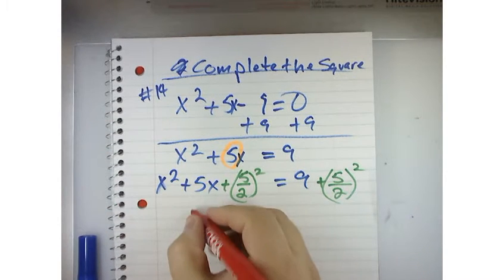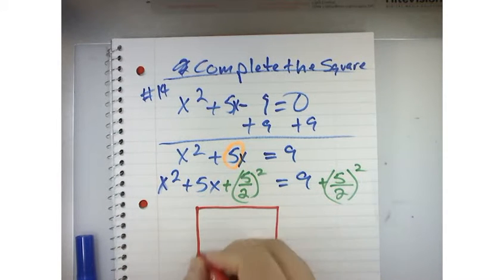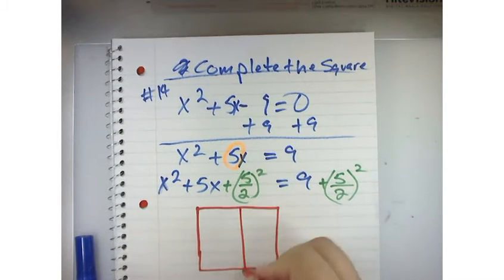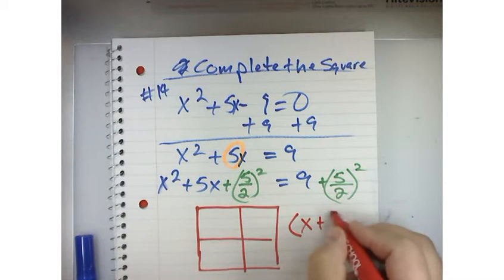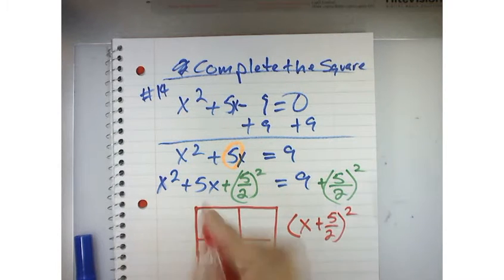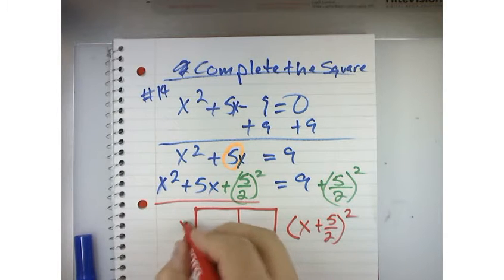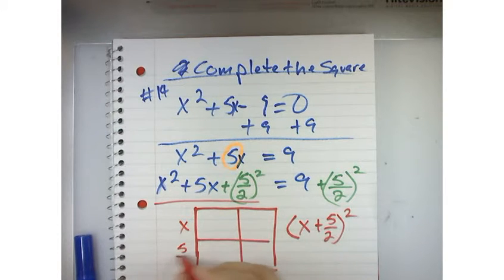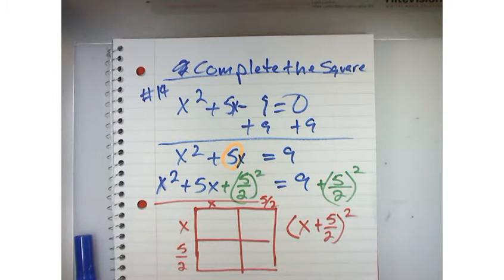The reason we do that is because it's technically x plus 5 over 2 squared will give you this stuff right here. How do I know that? It's rigged. So, if I put an x here and 5 over 2 here and an x here and 5 over 2 here, and I multiply it out.